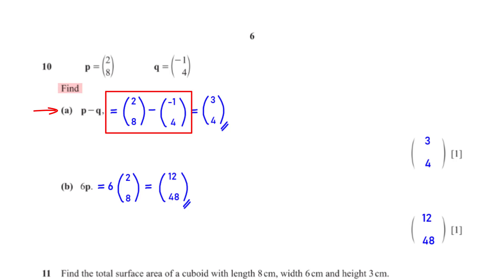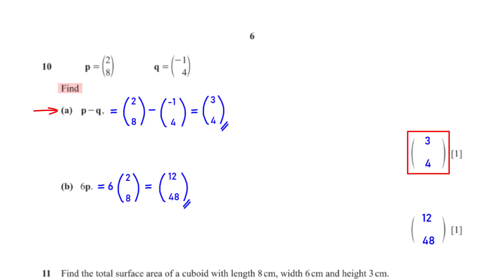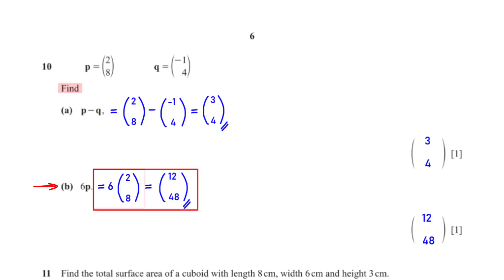We've been given vector p as (2, 8) and vector q as (−1, 4). To get p minus q, we subtract corresponding elements: 2 minus negative 1 is 3, and 8 minus 4 is 4, giving us (3, 4). Find 6p: vector p is (2, 8), so we multiply each element by 6 — 6 times 2 is 12, 6 times 8 is 48 — giving us (12, 48).